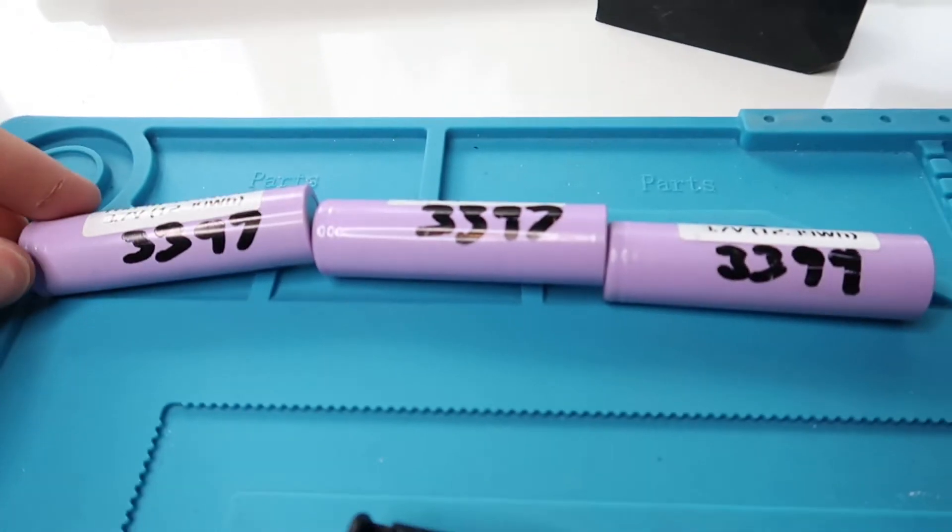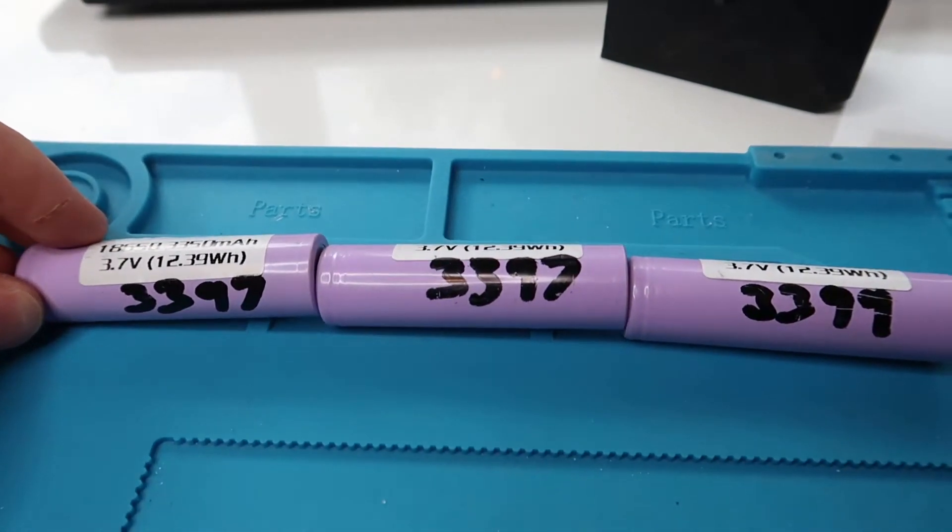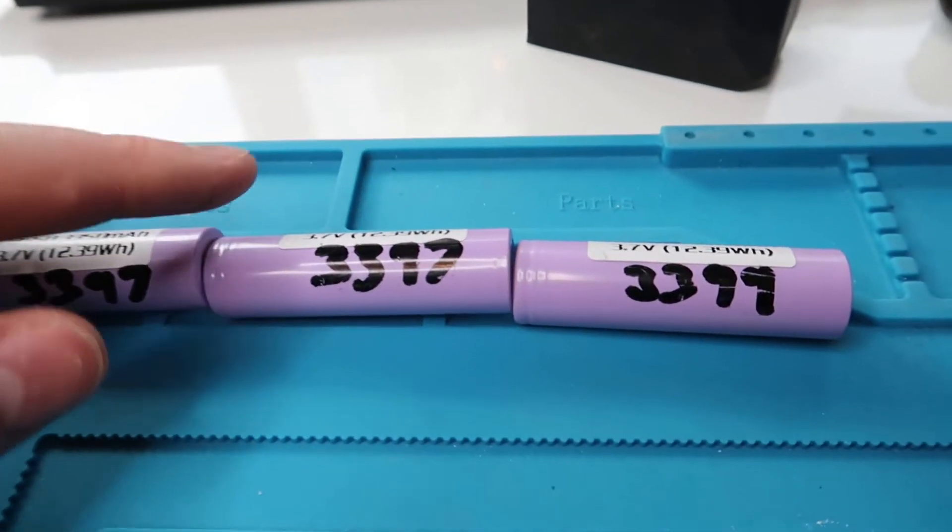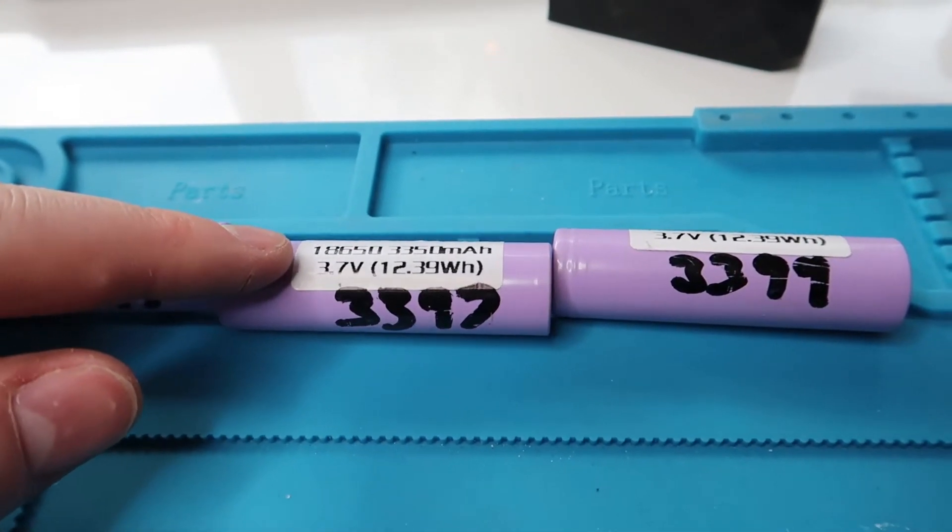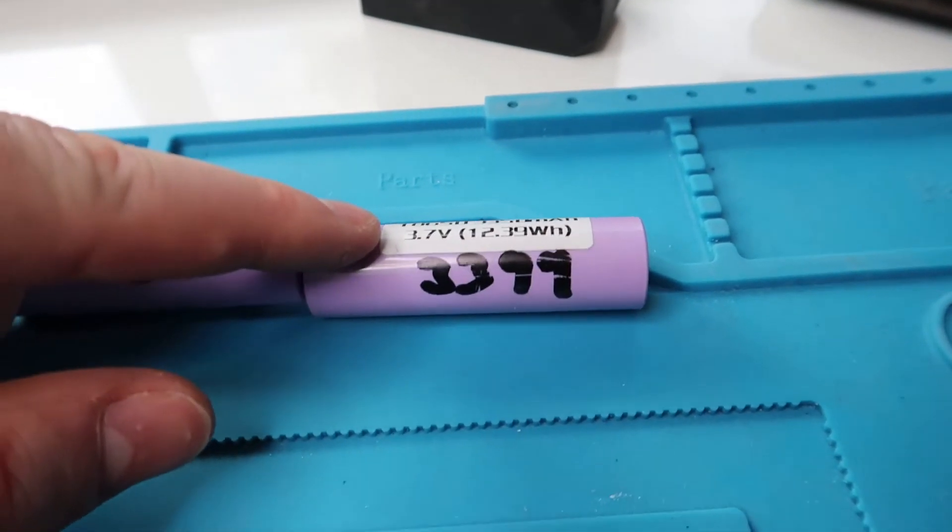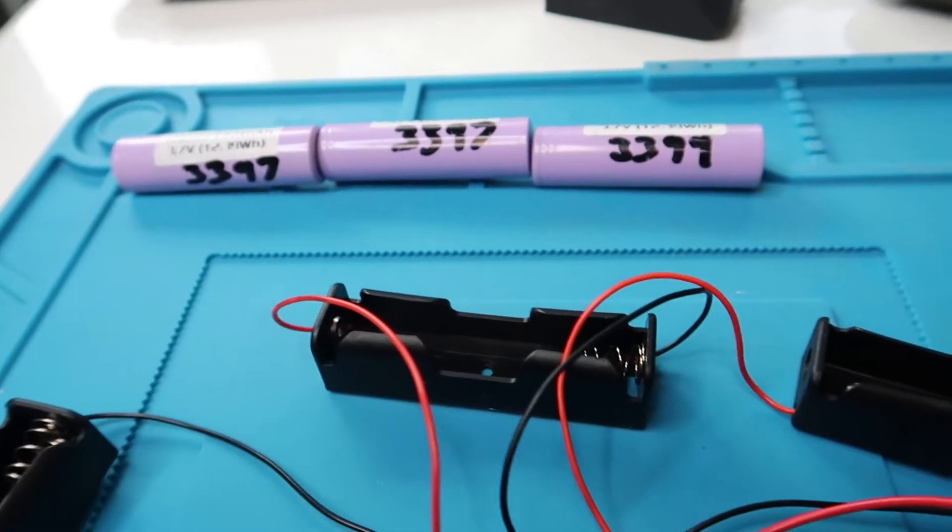As for the batteries, I have three of these 18650 cells. When I tested each of the cells, they are very close to each other. They're only about 2 milliamp hour out from each other. We want to get those cells as close as possible.